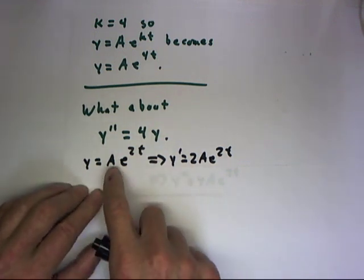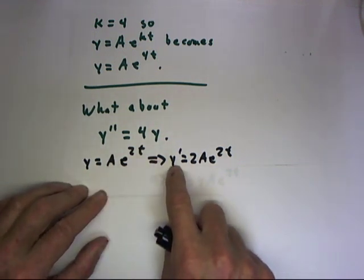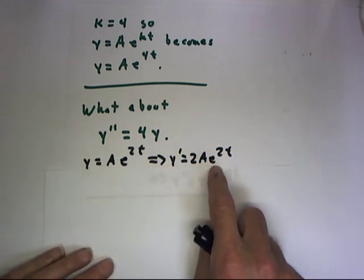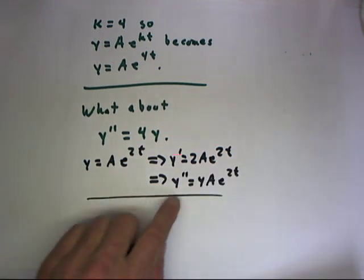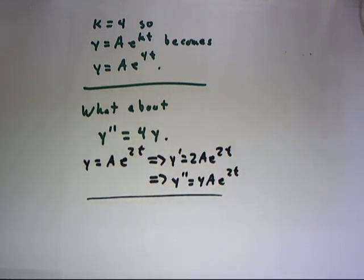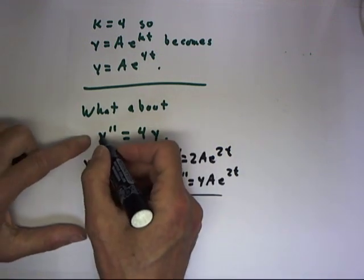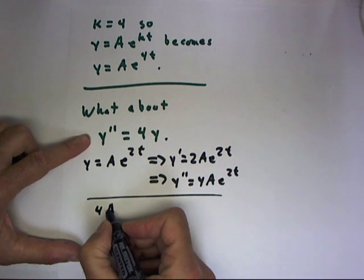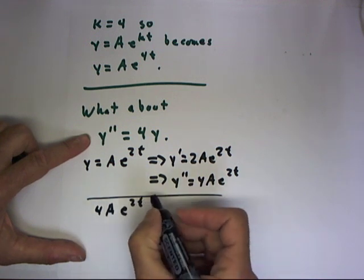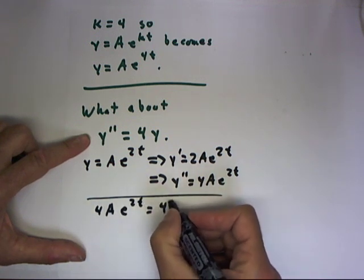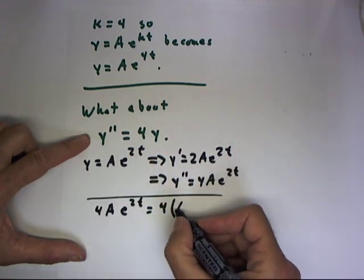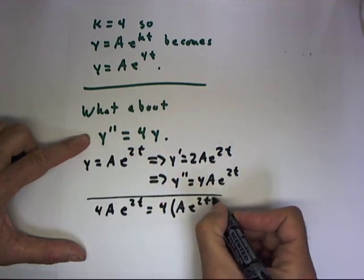The reason being that if we take one derivative of ae to the 2t, chain rule gives us 2ae to the 2t, and if we continue taking a second derivative, we get y double prime equals 4ae to the 2t, so that our equation becomes 4ae to the 2t equals 4 times the y function, which is ae to the 2t.